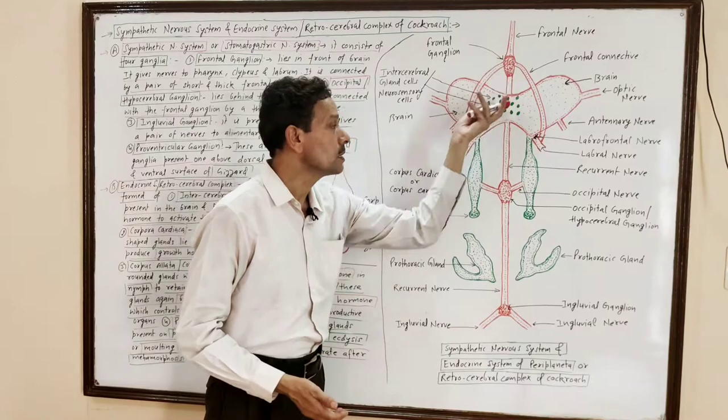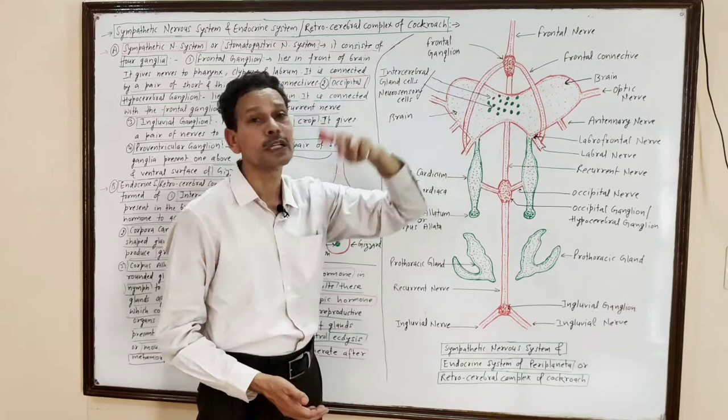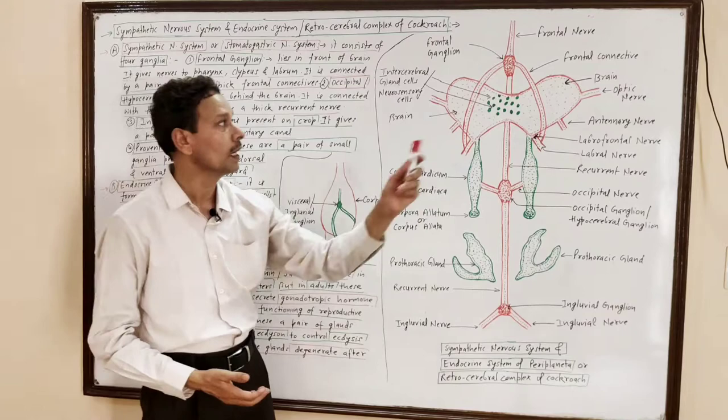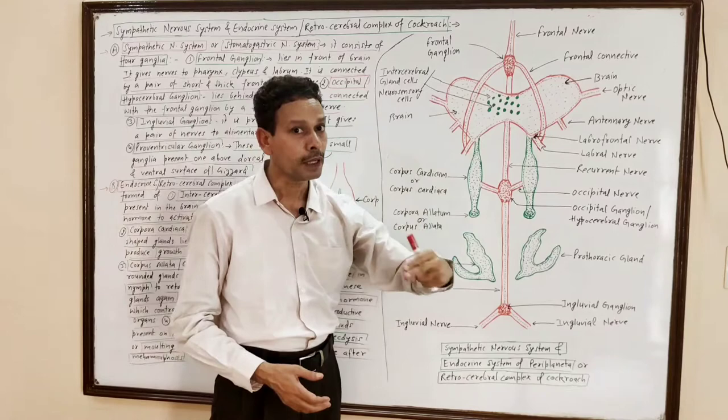The first ganglion lies above and in front of the brain — this is the frontal ganglion. This frontal ganglion gives nerves to the anterior region; it innervates the pharynx, labrum, clypeus, and anterior parts of the mouth.